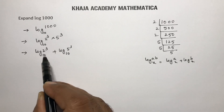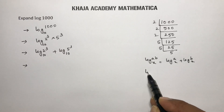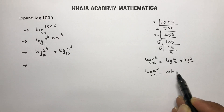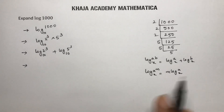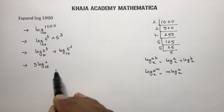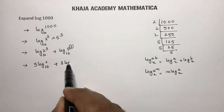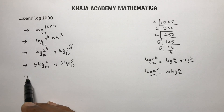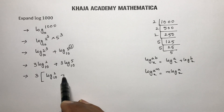Base 10 is the standard base. These two terms are in the form of logarithm of a power: log(a^m) to the base x equals m·log a to the base x. So we get 3·log 2 to the base 10 plus 3·log 5 to the base 10. You can take 3 common from both terms: 3 times (log 2 to the base 10 plus log 5 to the base 10).